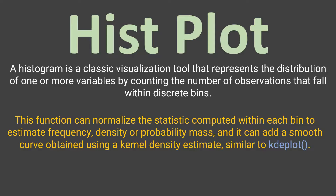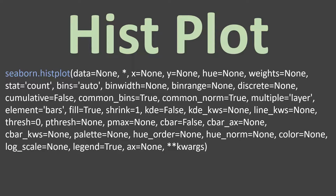This function can normalize the statistic computed within each bin, estimate frequency density or probability mass, and so on. Using hist plot you can do all of these things. We will also see the KDE plot in subsequent videos. For now, let's have a quick look at its arguments — this is the complete syntax and list of arguments you can use with hist plot, but we're going to use only those which are most frequently used.